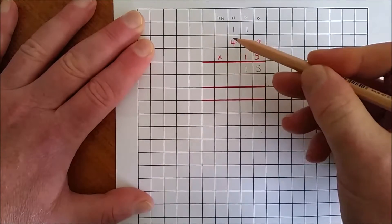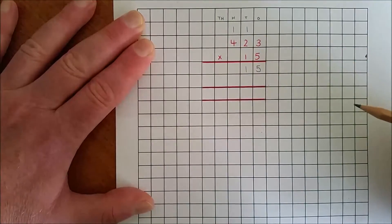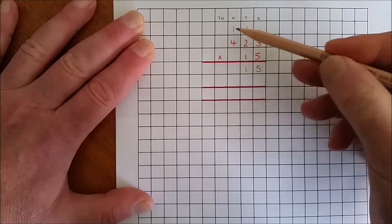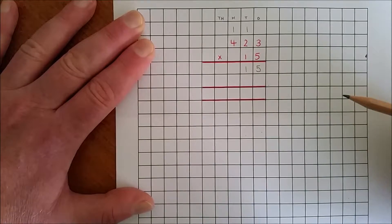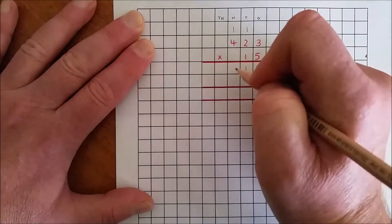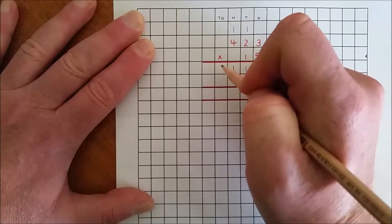Five by four hundreds is twenty hundreds, plus one hundred. That's twenty-one hundreds. Rename twenty-one hundreds as one hundred and two thousand.